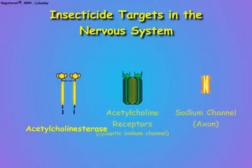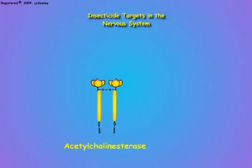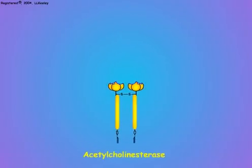First we will discuss the organophosphate and carbamate insecticides that inhibit acetylcholinesterase.